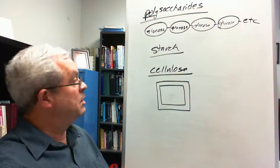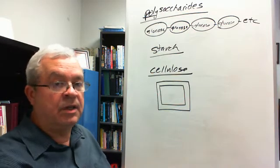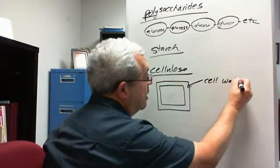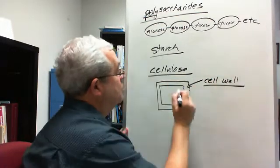Why is that? Because the plant cell has a rigid cell wall, and that cell wall is made of cellulose.